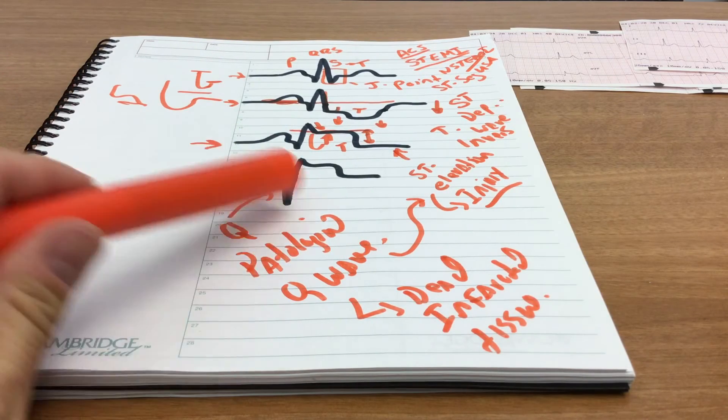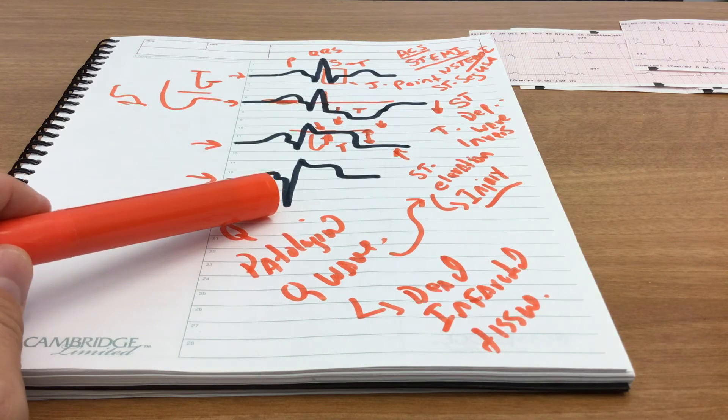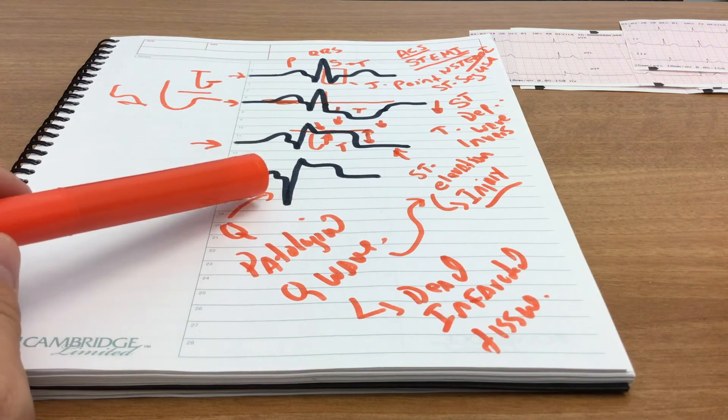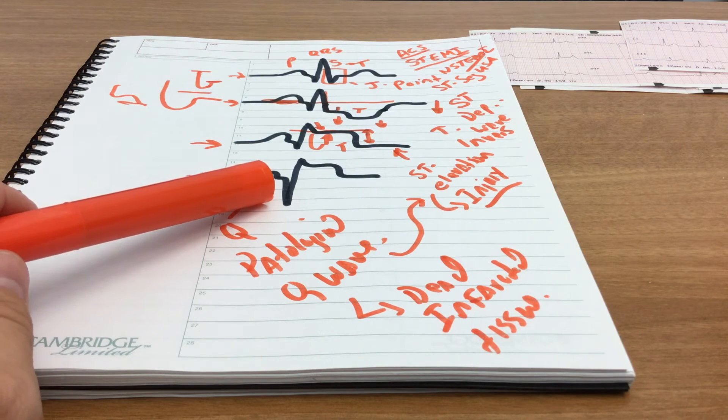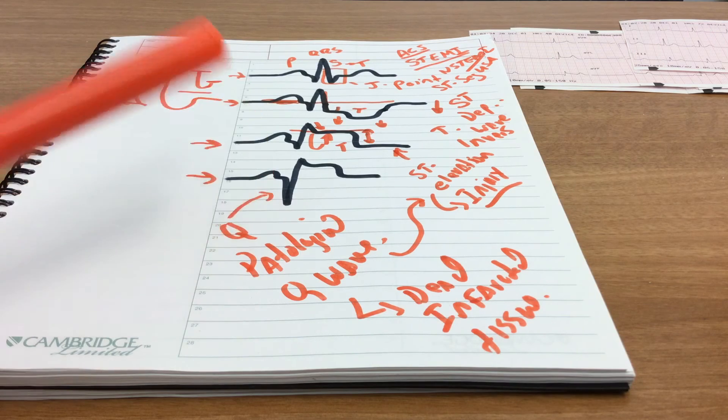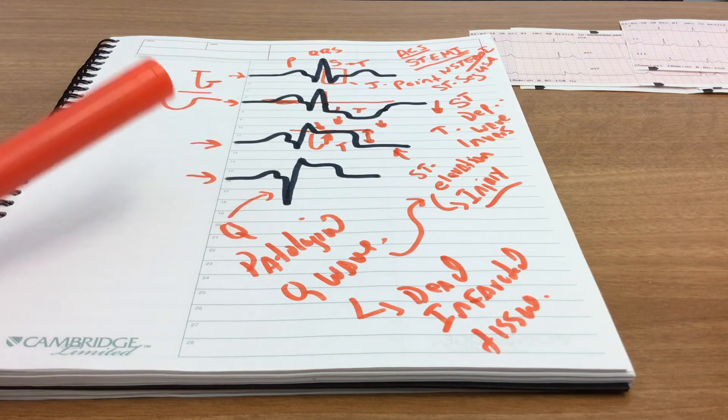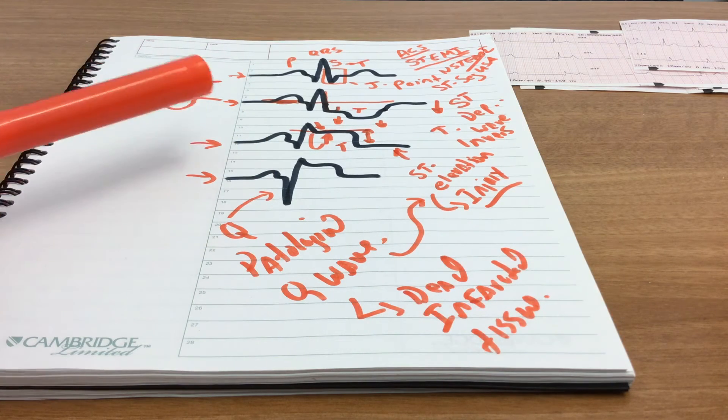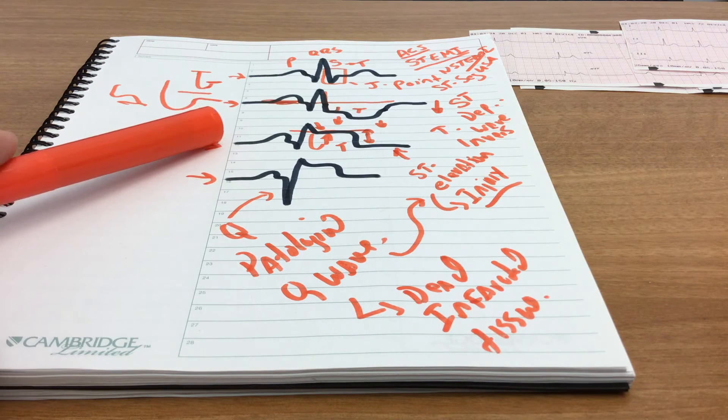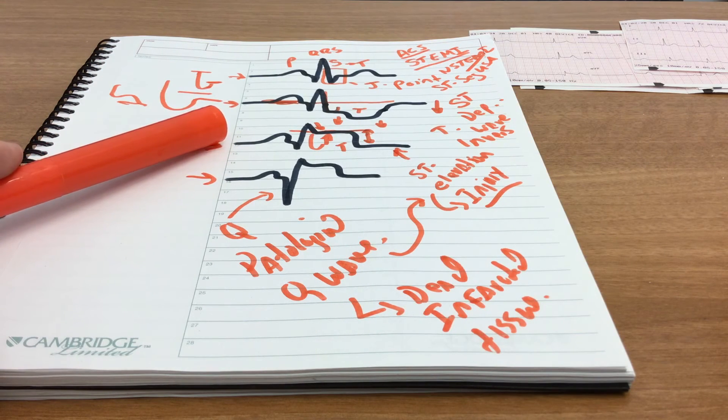So when you do a 12-lead on somebody who's having signs and symptoms suggesting an acute coronary syndrome and all you see are Q waves, you don't know if this is a new or old phenomenon. And in that case, it probably is best to err on the side of this may be a new phenomenon occurring, whereas these other changes tend to be more acute and they tend to resolve in some cases.